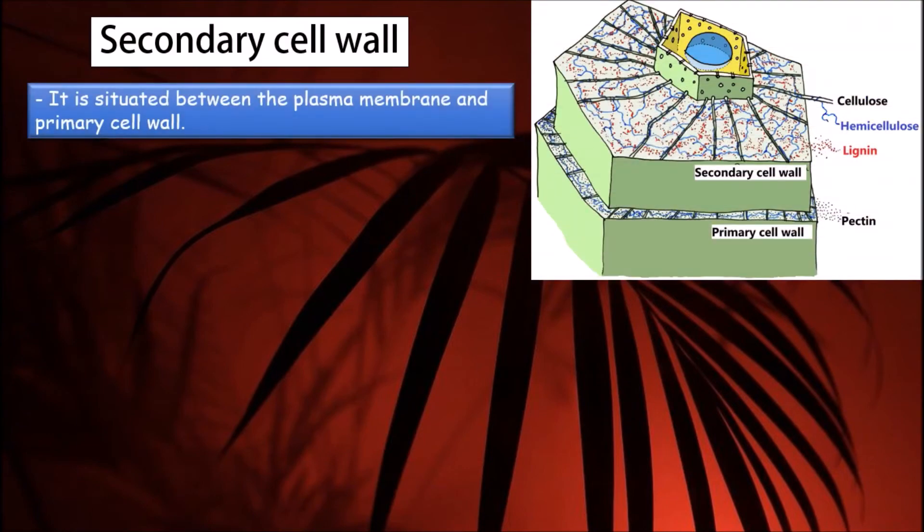Secondary cell wall. In some types of plant cells, after a maximum size or point in development has been reached, a secondary cell wall is constructed between the plasma membrane and primary cell wall due to the deposition of hardening substances in the primary cell wall.